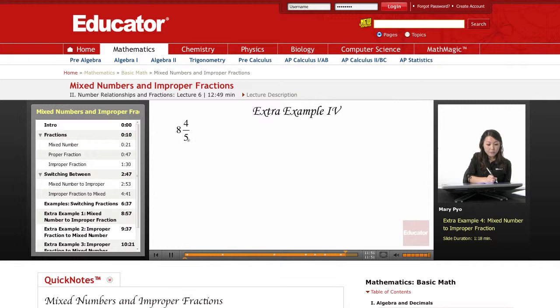So the first thing I do here is I take the denominator of 5. I'm going to multiply it to the whole number.